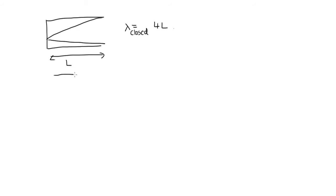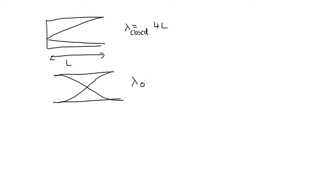For the open pipe, once again with length l, our fundamental looks like this. So we've got half a wavelength, but here we had a quarter. So the wavelength for the open pipe is equal to 2l. We can see that the wavelength for the closed pipe is 2 times the wavelength for the open pipe.